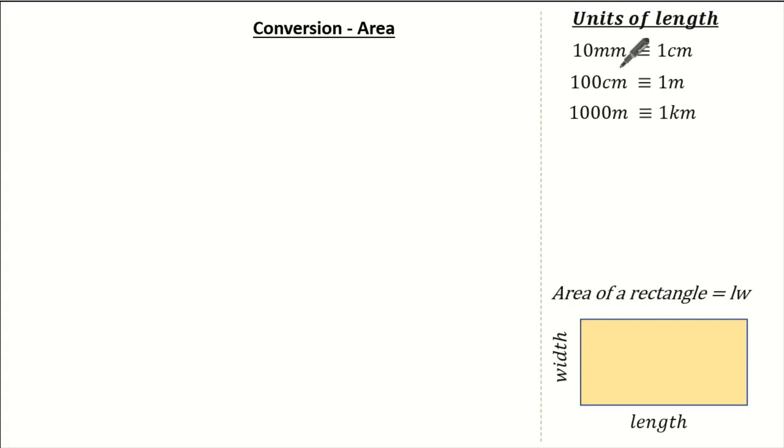Remember, 10mm is exactly the same as 1cm, 100cm is exactly the same as 1m, and 1000m is exactly the same as 1km. Also remember, the area of a rectangle or a square is simply length multiplied by the width.